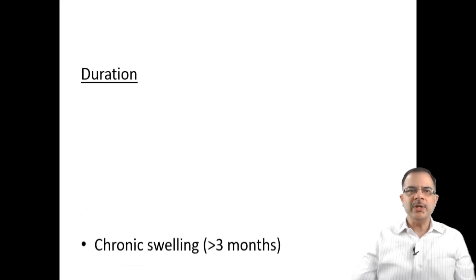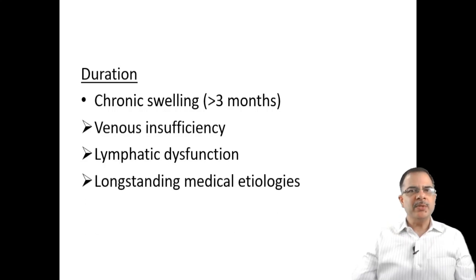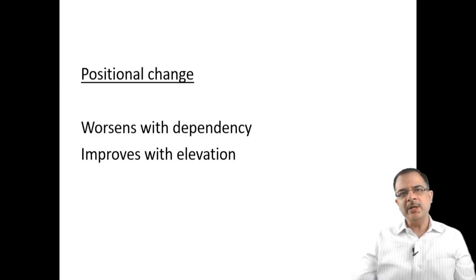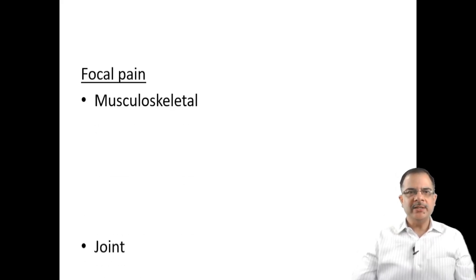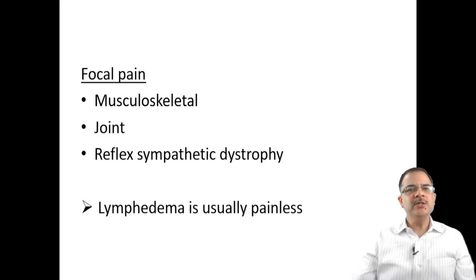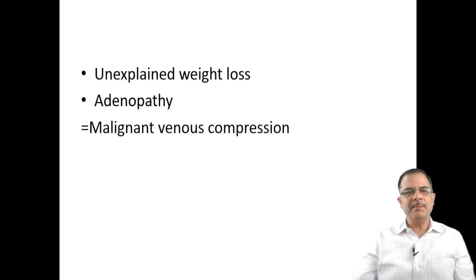Chronic duration — more than three months — is mainly due to venous insufficiency or lymphedema from lymphatic dysfunction, or long-standing medical etiologies like renal failure or heart failure. Ask about positional change: does swelling increase with dependency such as prolonged sitting or immobilization, and improve with elevation? This suggests venous disease. Focal pain points toward musculoskeletal or reflex sympathetic dystrophy. Lymphedema is usually painless. Unexplained weight loss points toward malignant venous compressions.